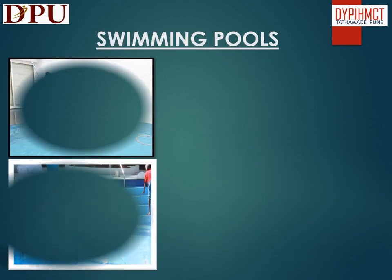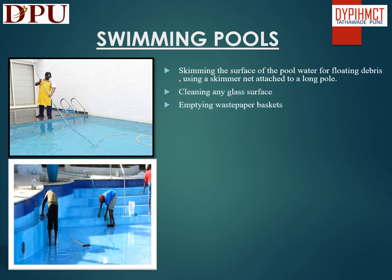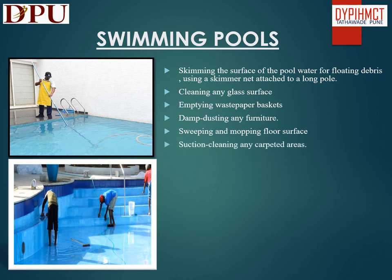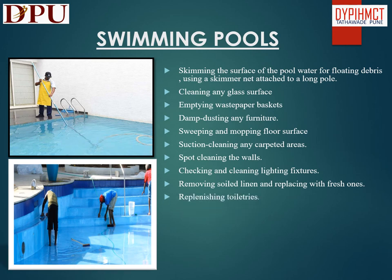In this slide we will discuss about cleaning of swimming pools. Tasks include skimming the surface of the pool water for floating debris using a skimmer netted to a long pole, cleaning any glass surface, emptying waste paper baskets, damp dusting any furniture, sweeping and mopping floor surfaces, suction cleaning any carpeted areas, spot cleaning the walls, checking and cleaning lighting fixtures, removing soiled linen and replacing with fresh ones, and replenishing toiletries.